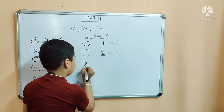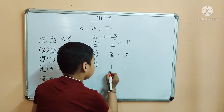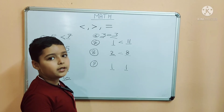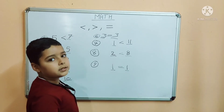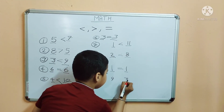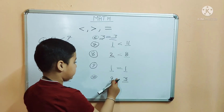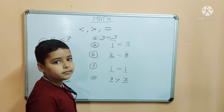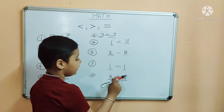Number 9: 1 and 1 — both numbers are the same, so which symbol do we take here? Yes, it is the equal symbol, because both numbers are the same on both sides. Number 10: 9 and 3 — here 9 is the bigger number and 3 is the smaller number. So which symbol do we take here? Yes, it is the greater than symbol, because 9 is the bigger number and 3 is the smaller number.